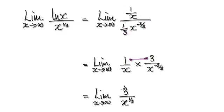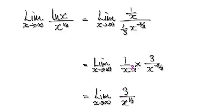That will then give you this — top times top. So imagine this as 3 over 3, that's like x to the power of 1, and that will then give you this thing here.